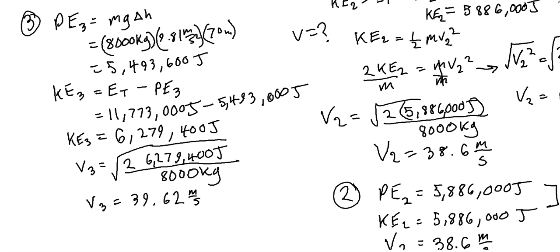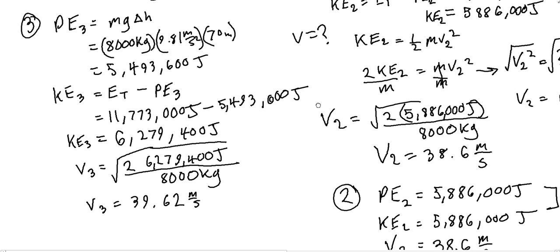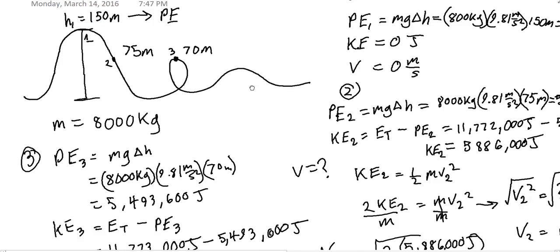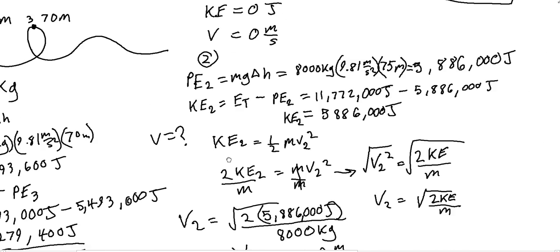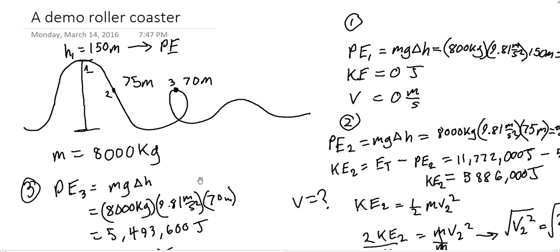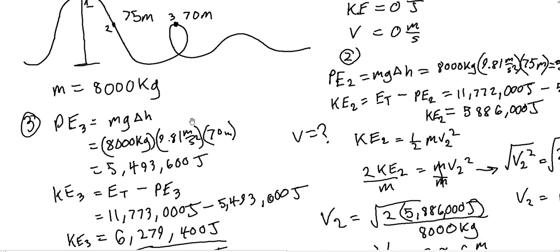And that's it — that's requirement 5 for the rollercoaster lab. Hopefully that should help those of you who are still having problems figuring out the velocities and the kinetic energy.